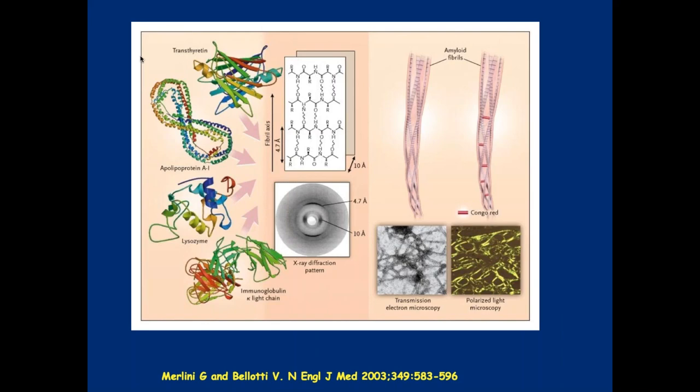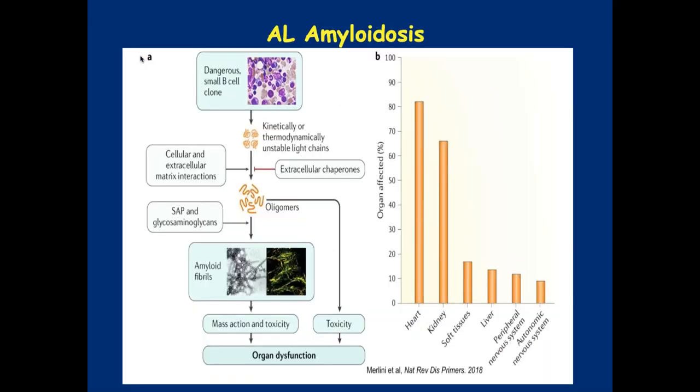This is a nice cartoon showing how these proteins, if you look at the left, don't look alike, but they share the same functionality — they make these fibrils that can get deposited. On the bottom right, you can see the electron microscopy and the polarized light microscopy, which is essentially showing the lighting up of the fibrils when they are deposited into tissues.